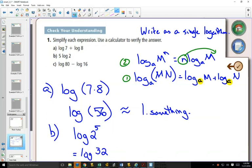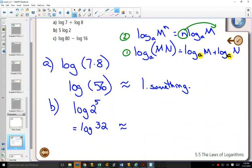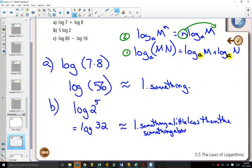and that's equal to log of 32, which is approximately 1 point something a little less than the something above. That's a long approximation. Whew, that looks like a really accurate approximation. 1 point something a little less than the something above, because 32 is smaller than 56.